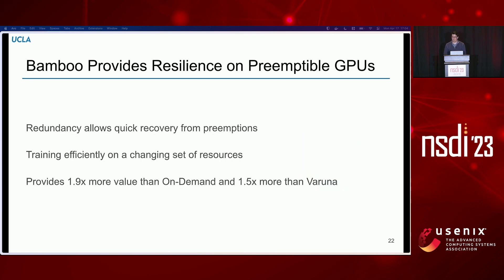With Bamboo, we focused on enabling training of very large models affordably, even in the face of higher preemption rates, by introducing redundancies into the pipeline and utilizing idle periods due to communication to provide quick recovery and high value. We've open-sourced the code on GitHub, and we are currently working towards producing commercial solutions for problems like these with our startup called Breeze ML. Thank you.